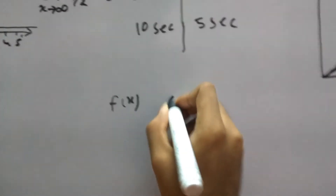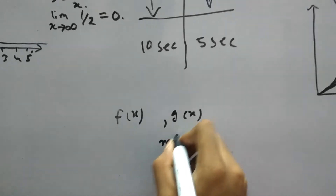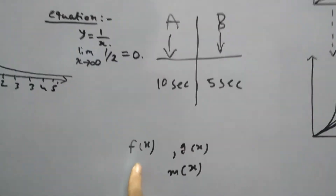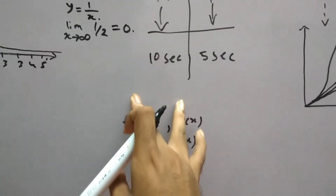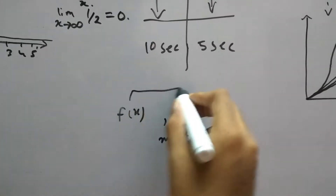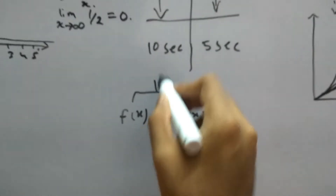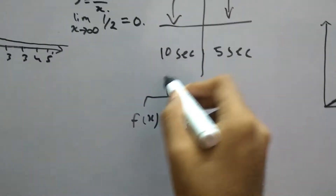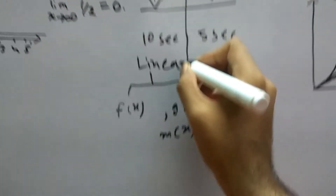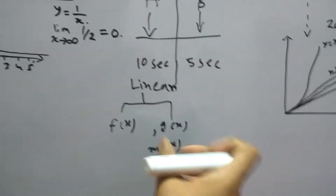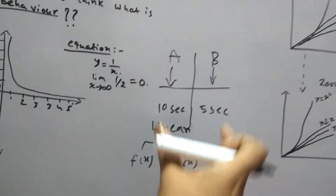If we have multiple functions — say f(x), g(x), and m(x) — and two of them are behaving the same way, we group them into one category and name it something, for example 'linear.' This sort of grouping or classification of functions based on behavior is what asymptotic analysis is about.